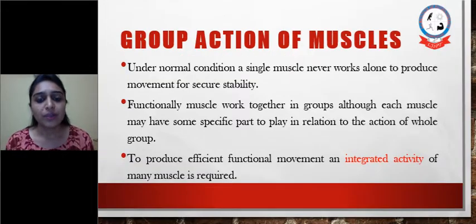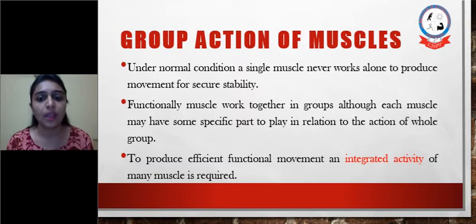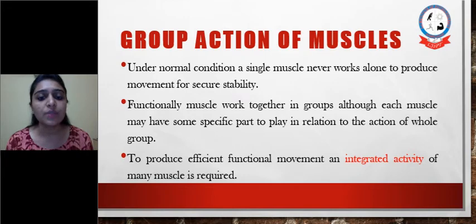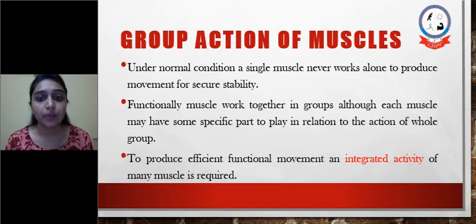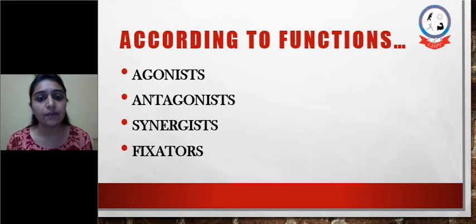Group action of muscles. Under normal conditions, a single muscle never works alone to produce movement. Functionally, muscles work together in groups, although each muscle has some specific part to play in relation to the action of the whole group. To produce efficient functional movement, an integrated activity of many muscles is required. According to function, they are divided into agonist, antagonist, synergist, and fixators.